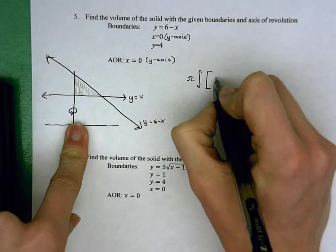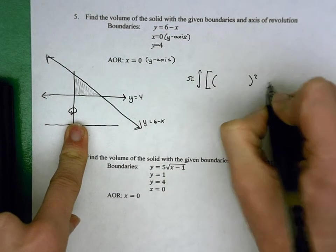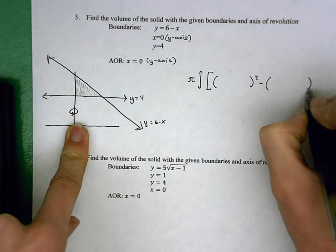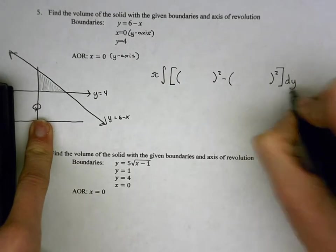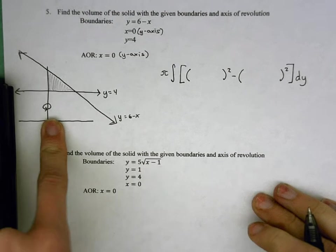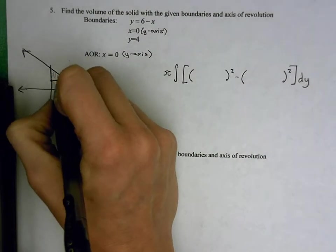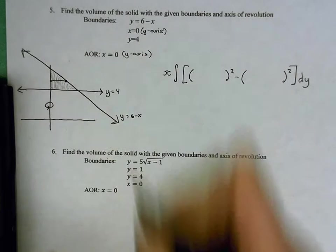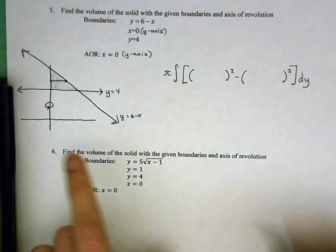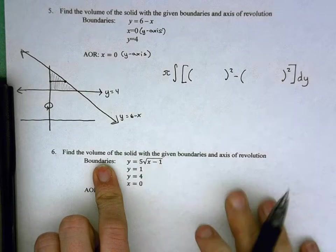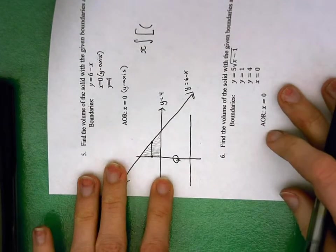My big R squared and my little r squared are going to be in terms of y, dy, because we're revolving around the y-axis. And my rectangles, when I form them, my representative rectangles to help me find my big R and my little r, are going to be oriented towards the y-axis here. And so what we're looking at is this region.